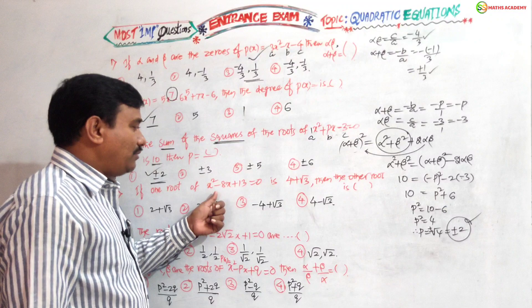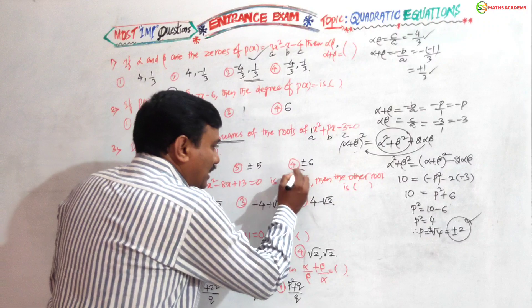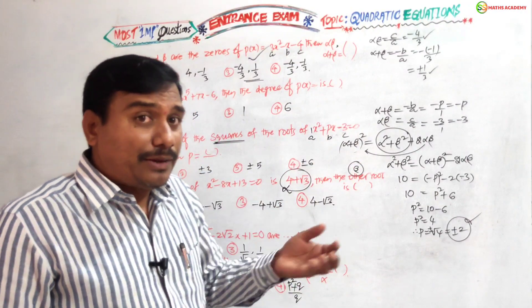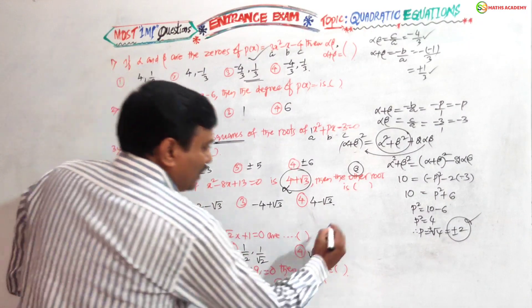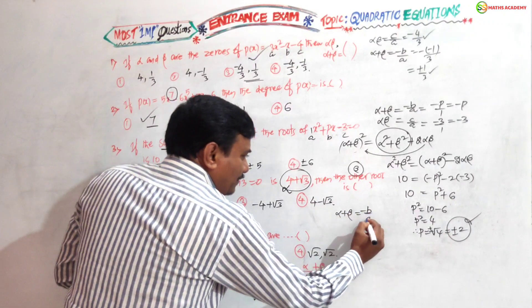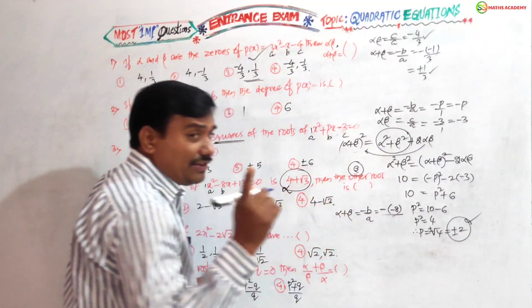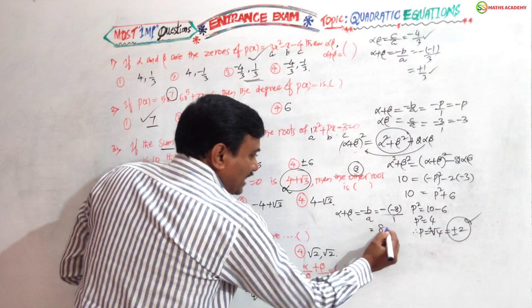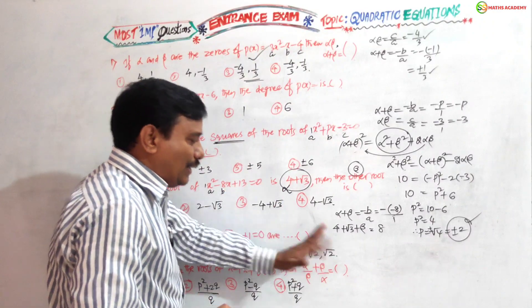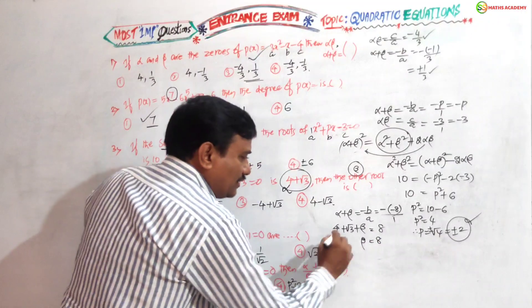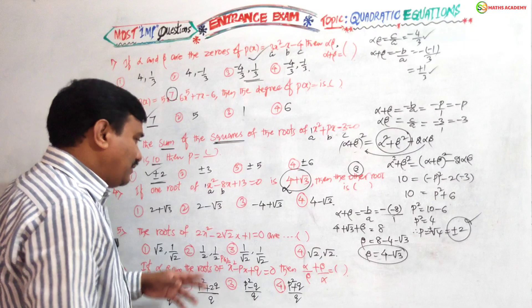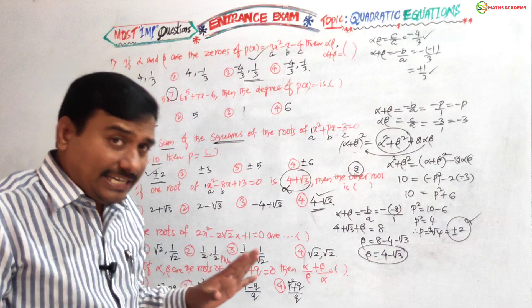Fourth question: if one root of x squared minus 8x plus 13 equals zero is 4 plus root 3, find the other root. One root alpha is given; we need beta. Using alpha plus beta equals minus b by a: b is minus 8, a is 1, so alpha plus beta equals 8. Substituting alpha as 4 plus root 3: beta equals 8 minus 4 minus root 3, giving beta equals 4 minus root 3. That is your answer.